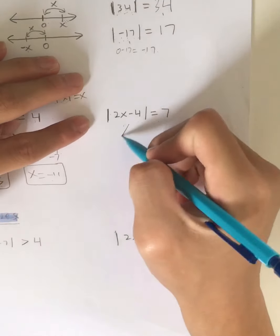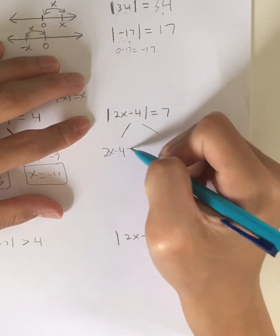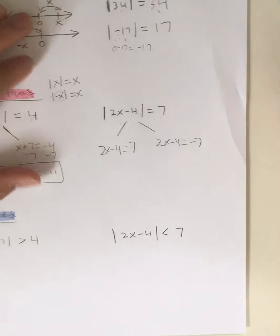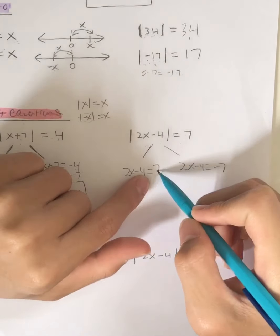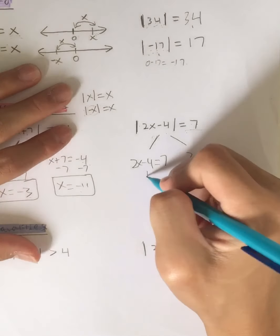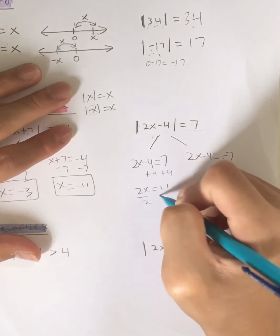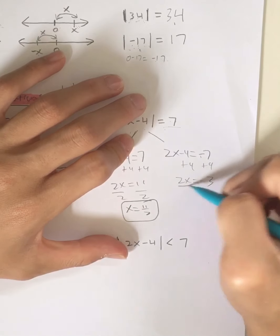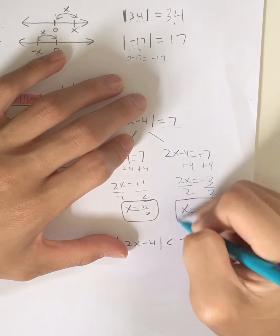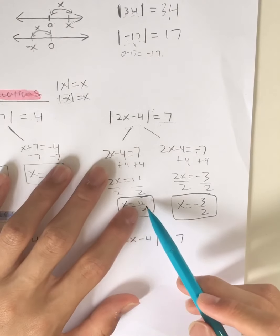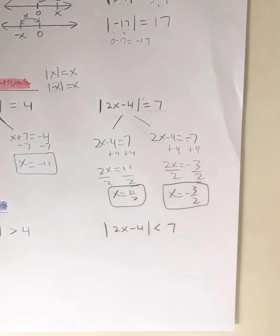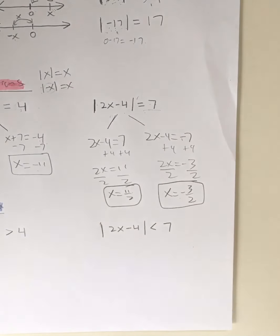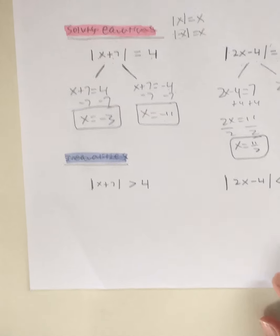Let's move on to the next equation: the absolute value of 2x minus 4 equals 7. We form two equations: 2x minus 4 equals 7 and 2x minus 4 equals negative 7. Solving the first: add 4 on both sides giving 2x equals 11, divide by 2, x equals 11 over 2. Solving the second: add 4 on both sides giving 2x equals negative 3, divide by 2, x equals negative 3 over 2. Those are our two answers.